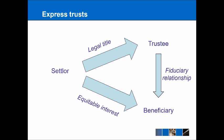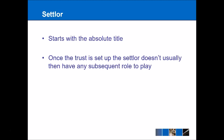The settler starts with the absolute title to the property. At this point, the ownership isn't split — the legal title and the beneficial title all exist within one person. Once the trust is set up, the settler doesn't usually have any subsequent role to play. It is possible that the settler could afterwards be a trustee or a beneficiary, or possibly even both, but in most trust relationships the settler disappears once the trust is actually established.